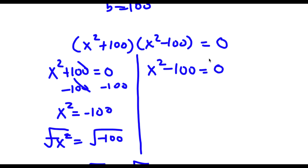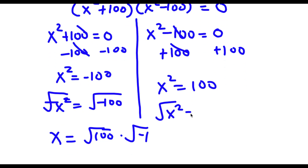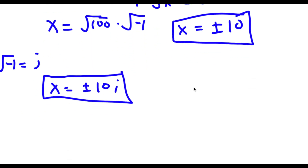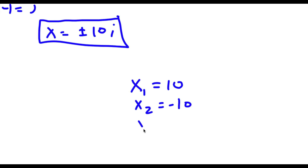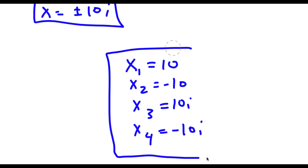For x squared minus 100 equals 0, I add 100 on both sides so x squared equals 100. Taking the square root on both sides, x equals plus or minus 10. So my four solutions to this problem are x equals 10, x equals negative 10, x equals 10i, and x equals negative 10i.